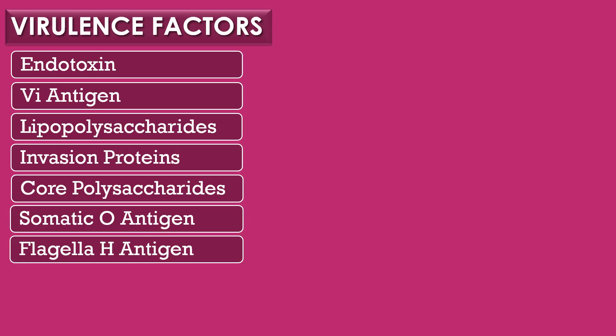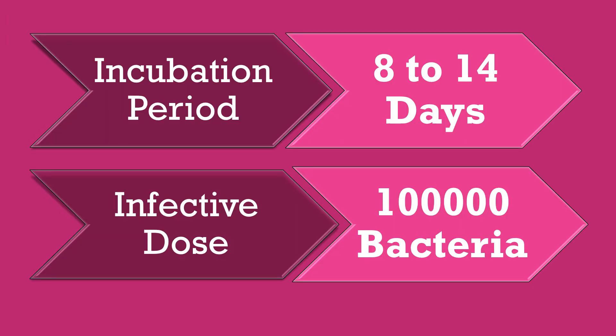The ability of microorganisms to cause disease is called virulence. The term virulence was first coined by scientist Louis Pasteur, and virulence factors are the agents responsible for causing infection in human beings or any host. Salmonella species produces seven types of virulence factors: endotoxin, Vi antigen, lipopolysaccharides, invasion proteins, core polysaccharides, somatic O antigen, and flagella H antigen. The incubation period is 8 to 14 days and the infective dose required is 100,000 bacteria.